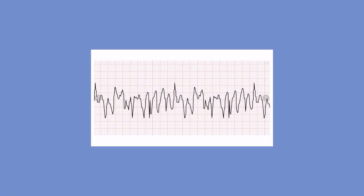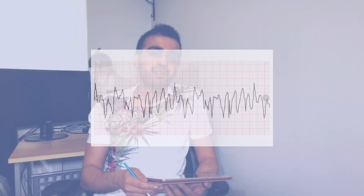Ventricular fibrillation is incompatible with life. If the ventricles are fibrillating you're not getting blood around your body, you won't have a pulse, and it forms part of a shockable algorithm in a resuscitation scenario. As you can see on the ECG it's very fuzzy, there's no coordinated activity — it's not a fast and regular repeated rhythm like ventricular tachycardia was.